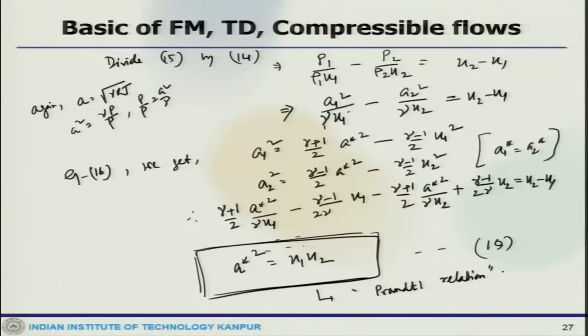We are talking about normal shocks. We just started deriving the normal shock relations, and what we obtained finally in the last lecture is the Prandtl relation, which provides the relationship between a-star and the velocities between upstream and downstream.